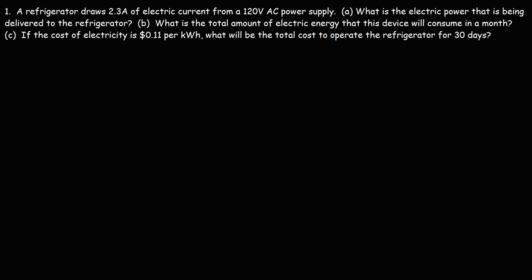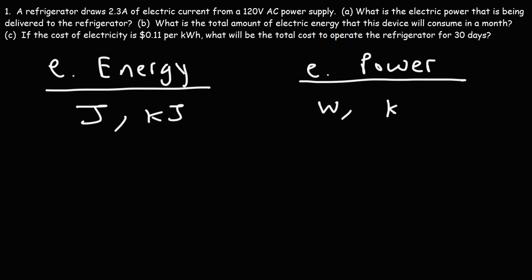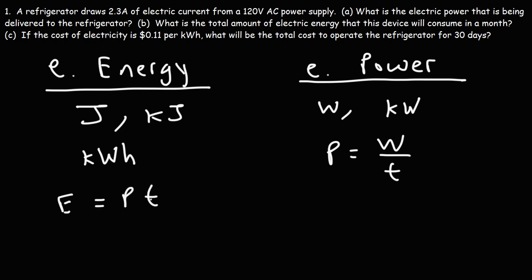In part B we need to calculate the electric energy. Electric energy is different than electric power. Energy is measured in things like joules or kilojoules. Power is measured in things like watts or kilowatts. By the way, kilowatt hours is not a unit of power — it's a unit of energy. Power is the rate at which energy is being transferred; it's work divided by time.